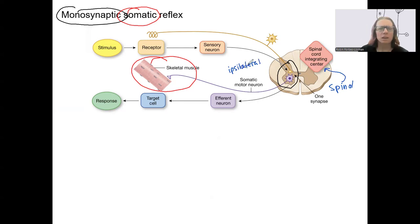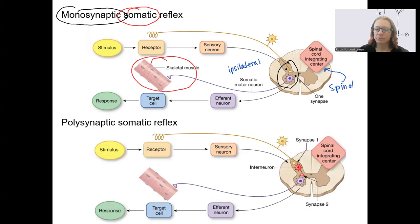Okay. Here is one more. Looks very similar. Only difference is there is an interneuron in the spinal cord. So, that means it's polysynaptic. Two synapses because of this interneuron. Otherwise, it is still somatic, still ipsilateral, still spinal reflex.